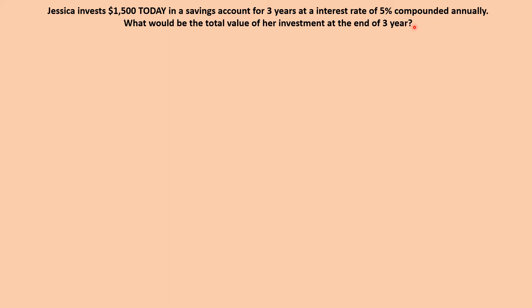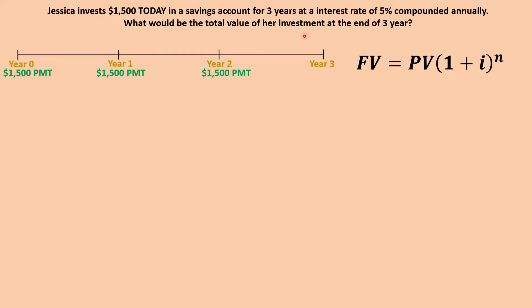You can actually solve this using the future value of compound interest formula, because this is a time value of money question. With any time value of money question, the first thing we do is draw a timeline. We have a timeline for three years, with a payment of $1,500 being made at the beginning of each payment period, and our interest rate is 5% compounded annually.